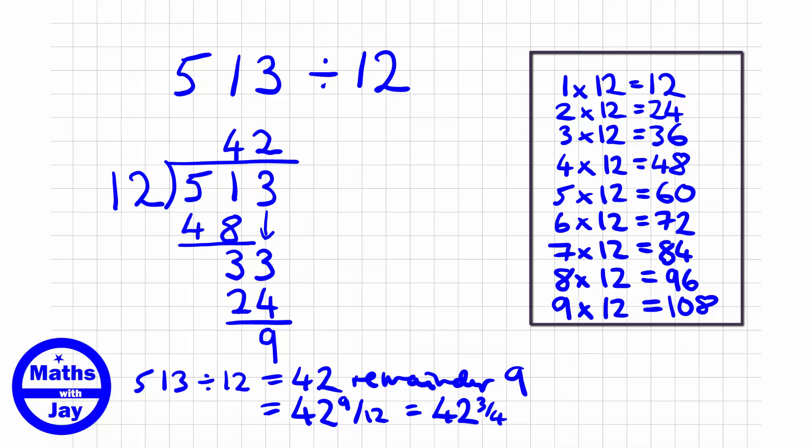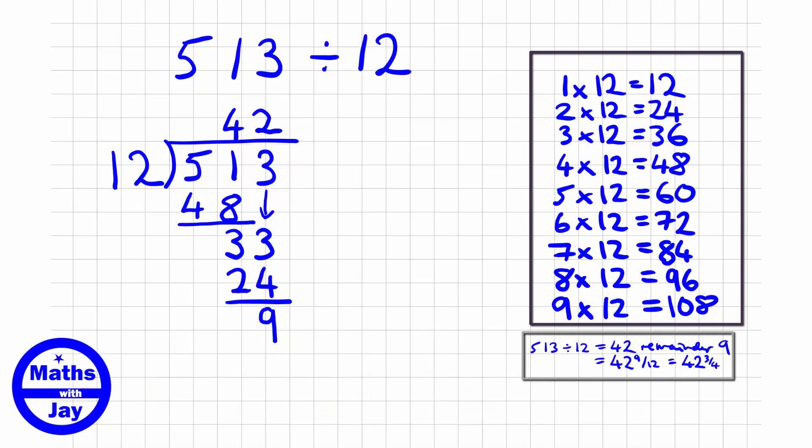But what we want to do is now use the calculation, the long division, to work out what the decimal numbers are, because you may not get an example that's as simple as this one. So let's just remove this bit of working out. Right, so let's put that to one side. So let's now continue our calculation. It's almost as if we haven't got anything left to divide the 12 into, have we?